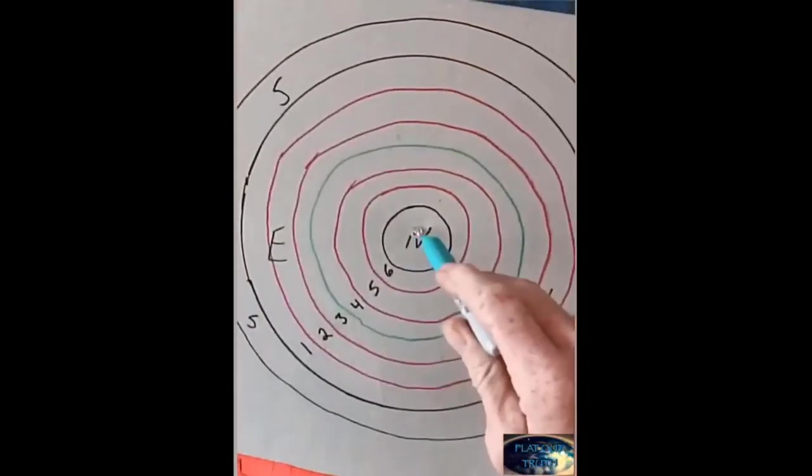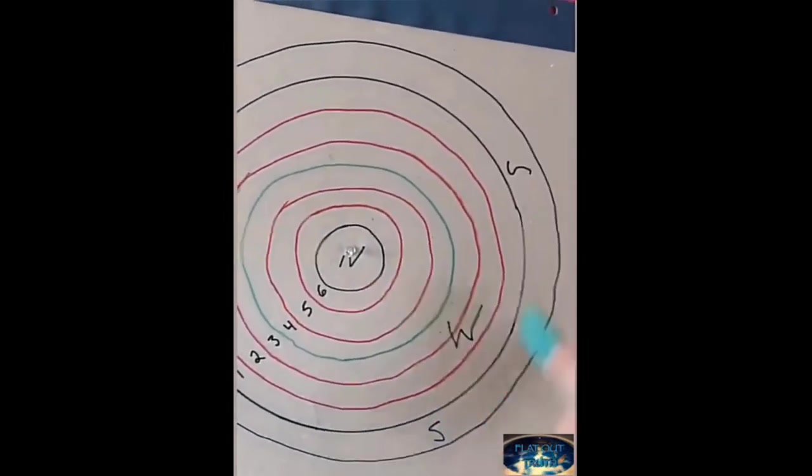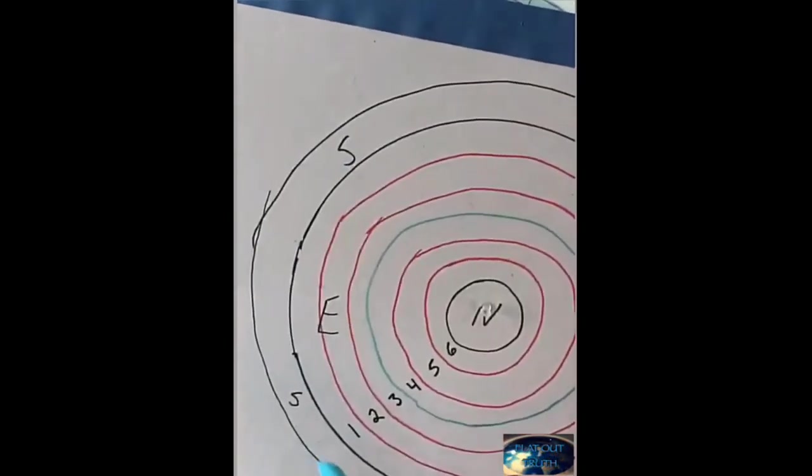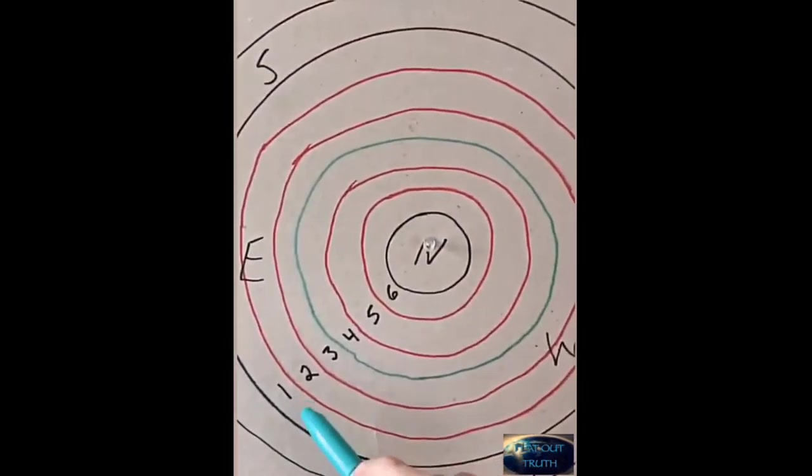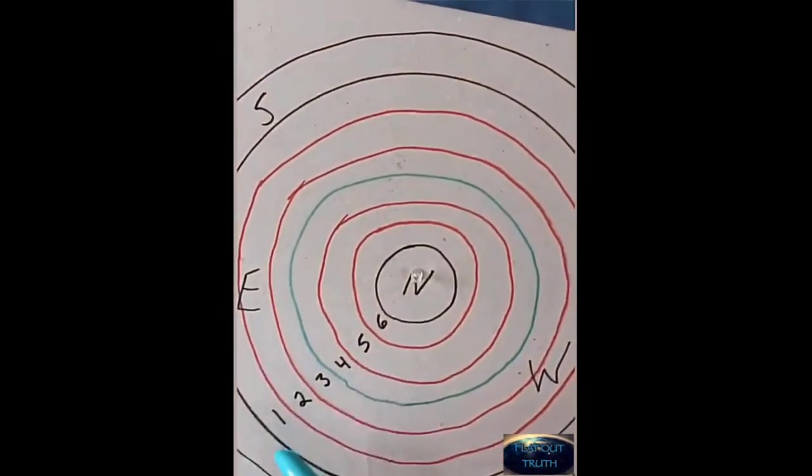You have your north pole here and you have your south which is the southern ice wall. Now in the Book of Enoch when it says that the sun goes from the second portal into the first portal into the second and then from the second into the third, well it's really simple.